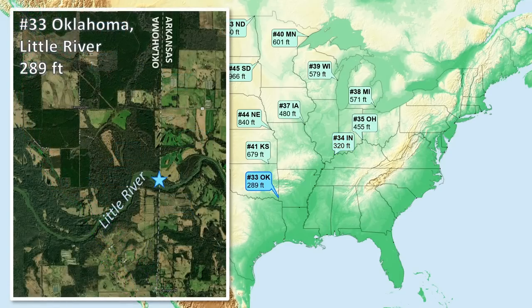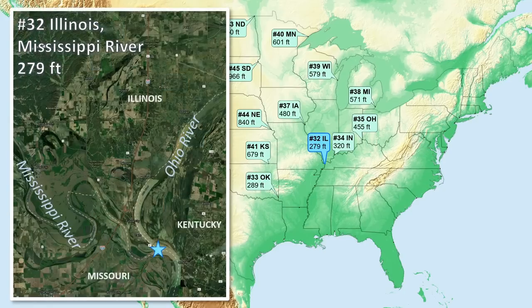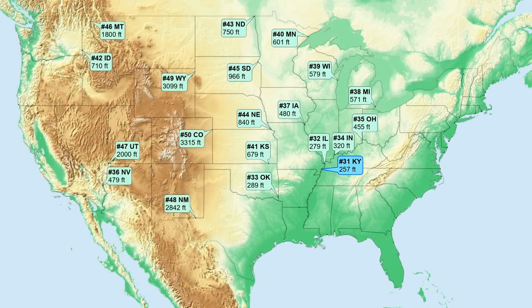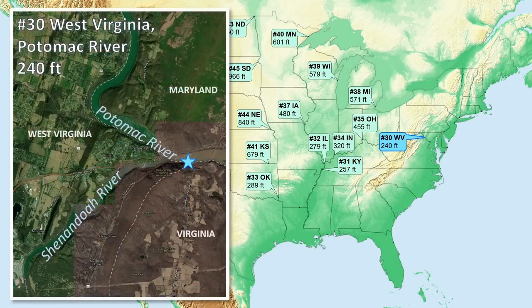Number 33 is Oklahoma, on the Little River. Number 32 is Illinois, on the Mississippi River at the Ohio River fork. Number 31 is Kentucky, on the Mississippi River. Number 30 is West Virginia, on the Potomac River.